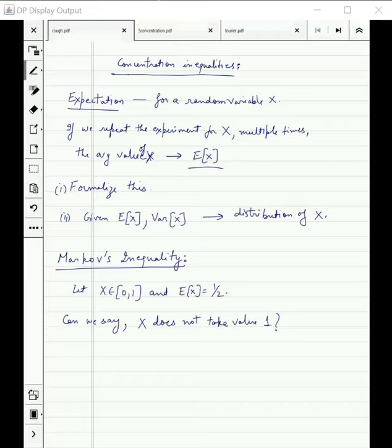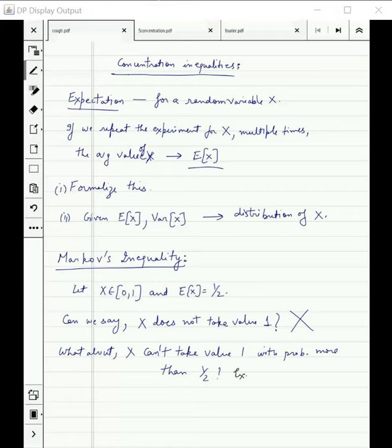Some moment of thought will show that this is completely incorrect. There are many random variables which take value 1 with some probability and still the expectation would be 1/2. What about X cannot take the value 1 with probability more than 1/2? Is this correct?